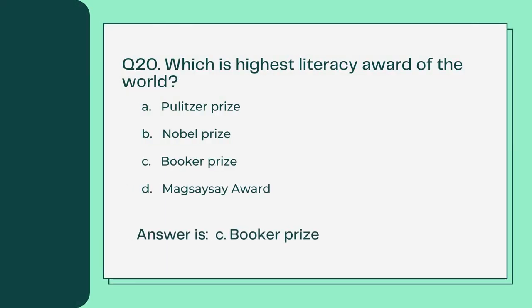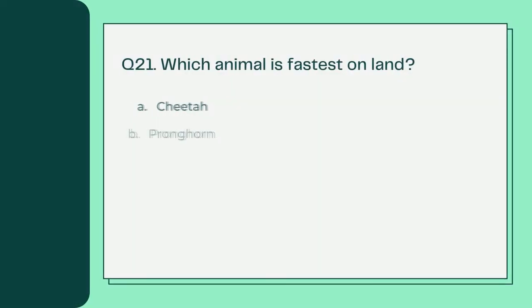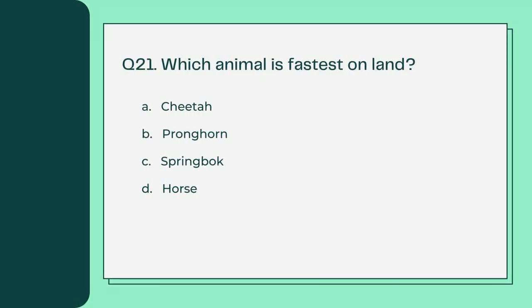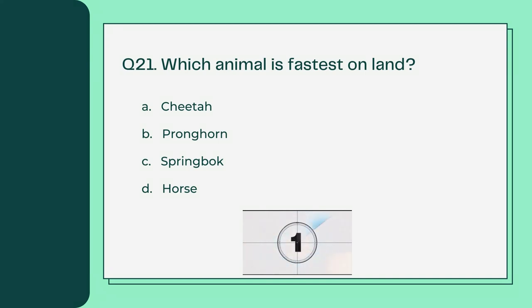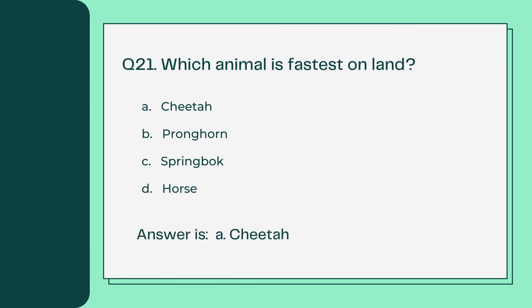Which animal is the fastest on land? A. Cheetah B. Pronghorn C. Springbok D. Horse. Answer is A. Cheetah.